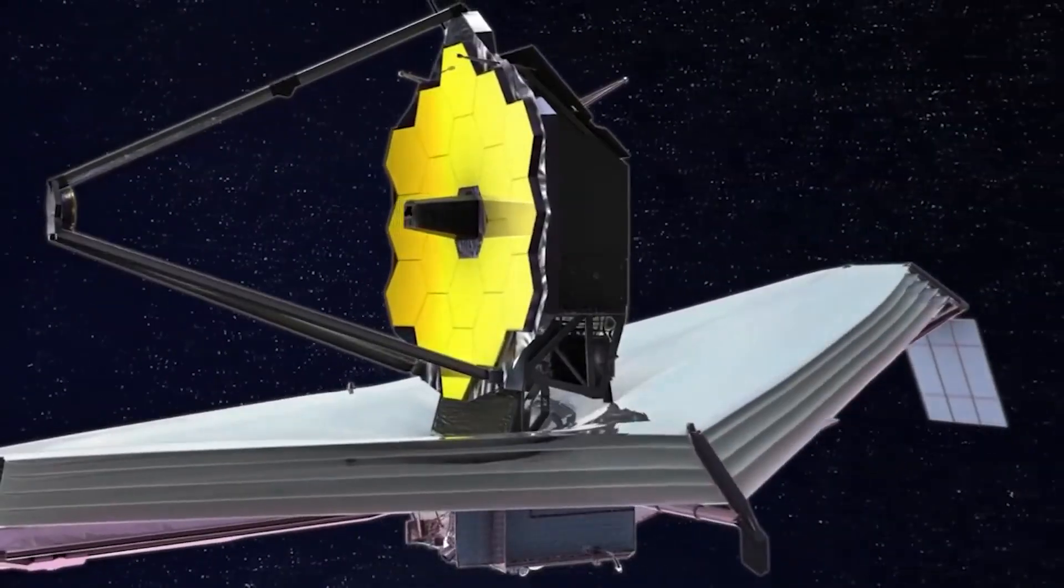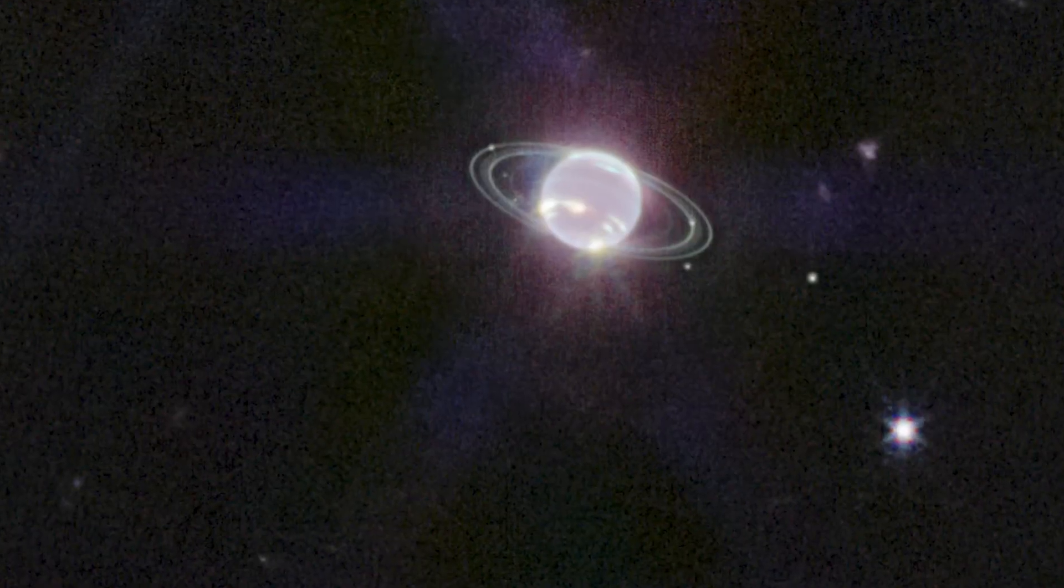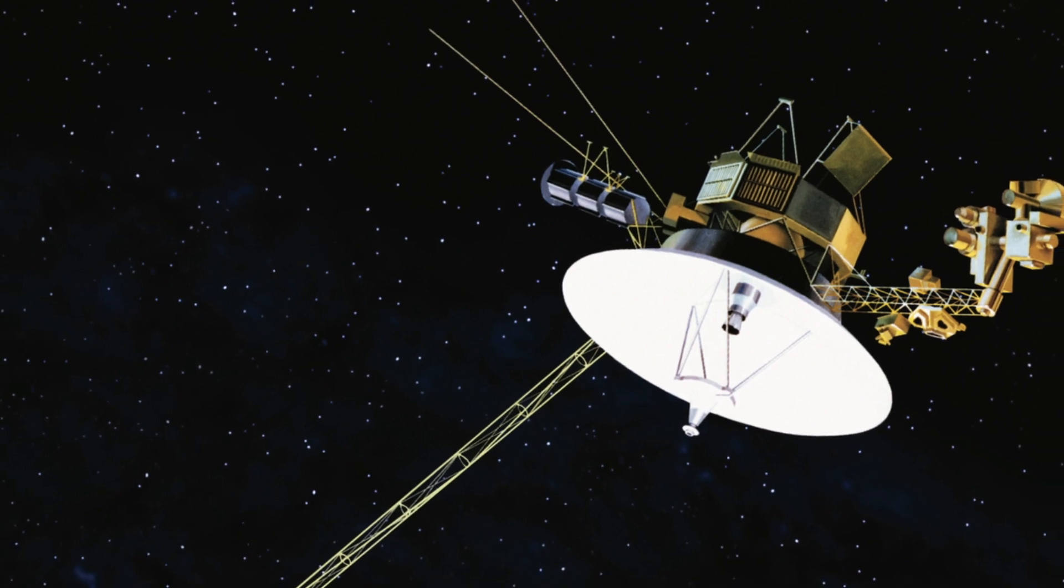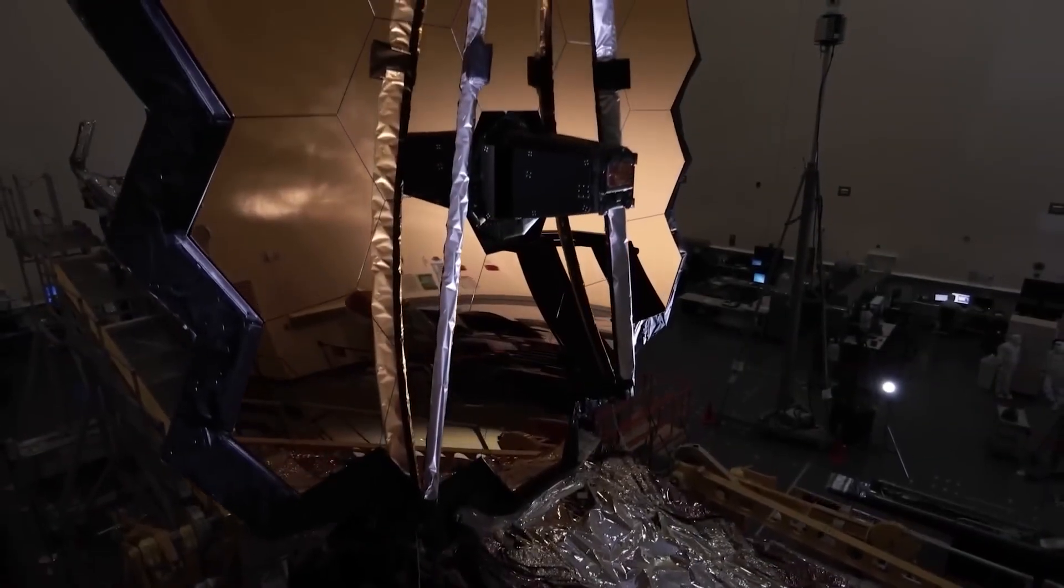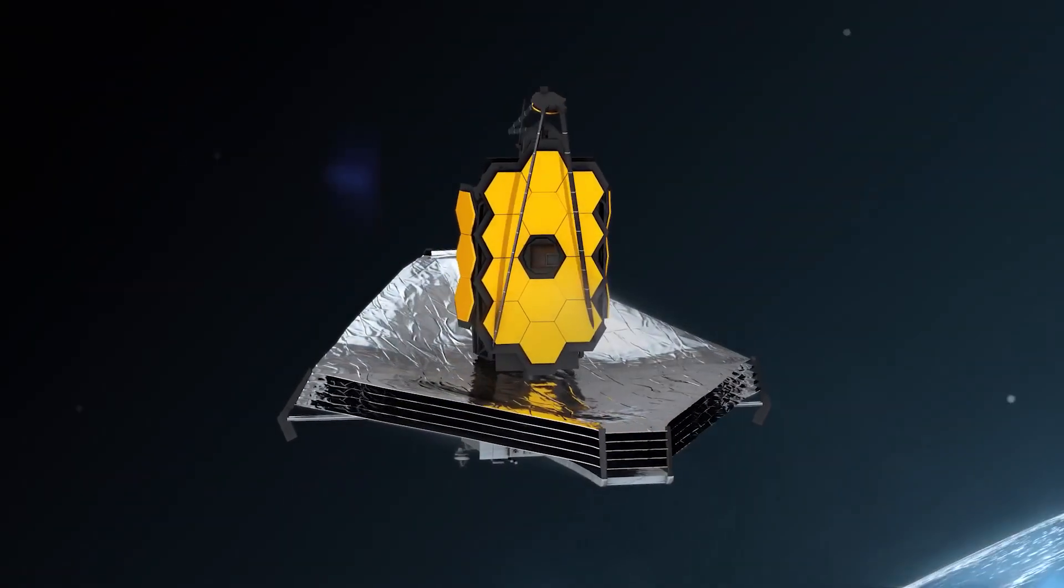James Webb Space Telescope offers a spectacular new picture of Neptune's rings, but Voyager got there first. The James Webb Space Telescope has discovered another spectacular finding which may redefine our view of the planet Neptune.